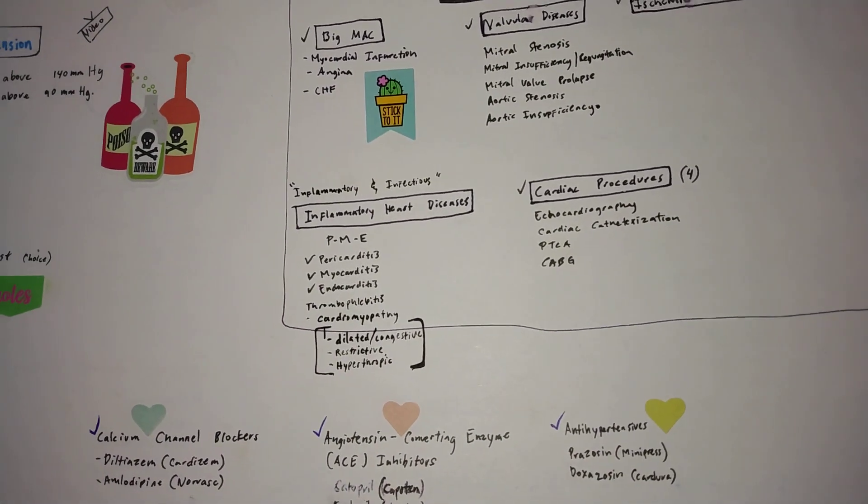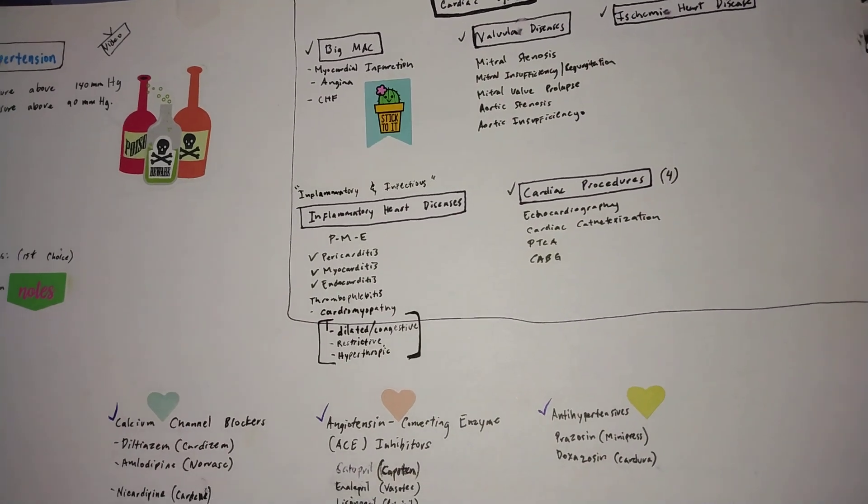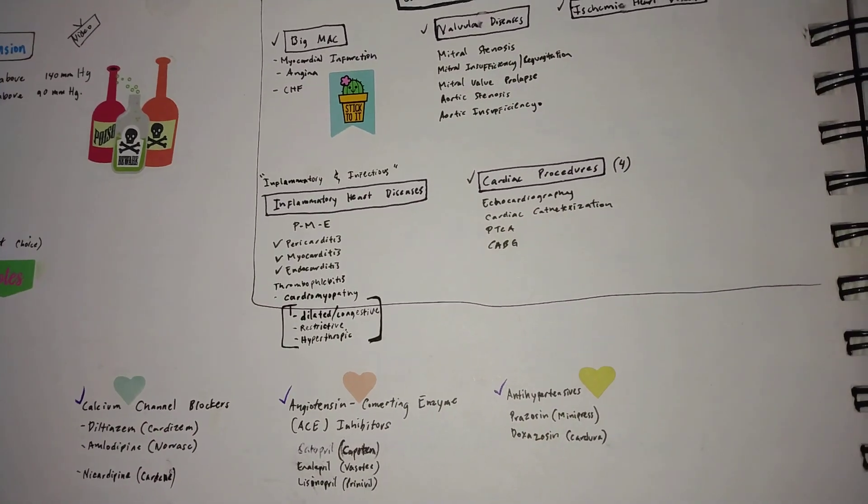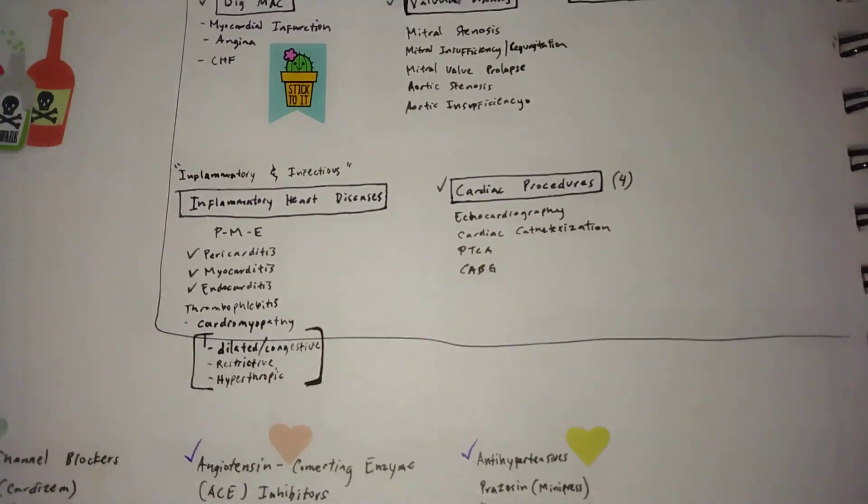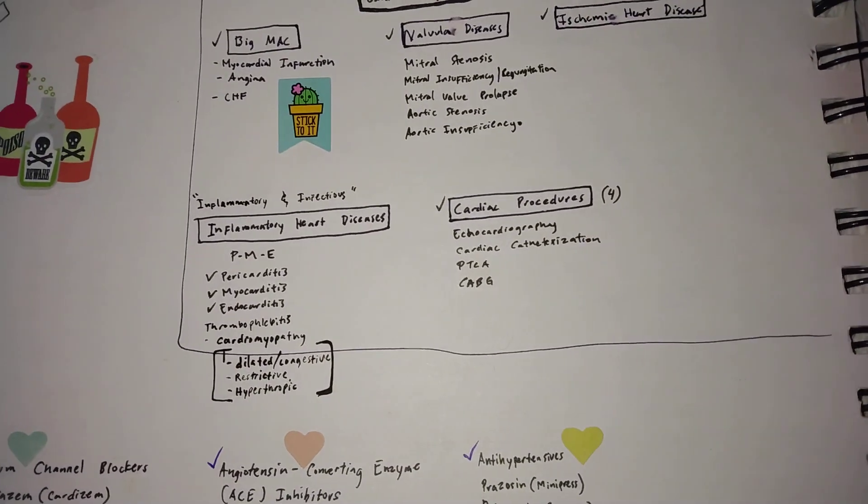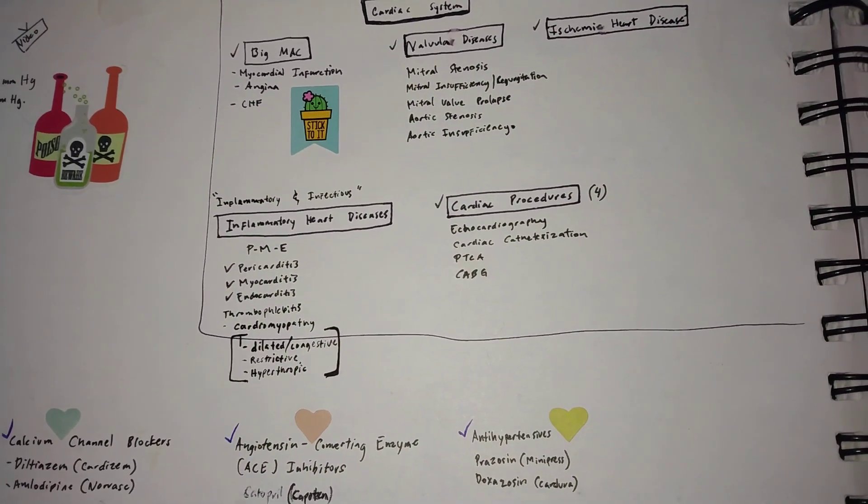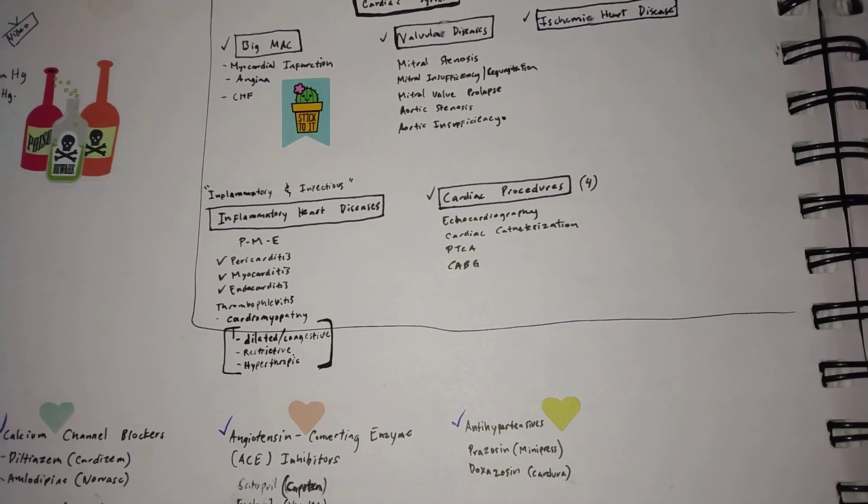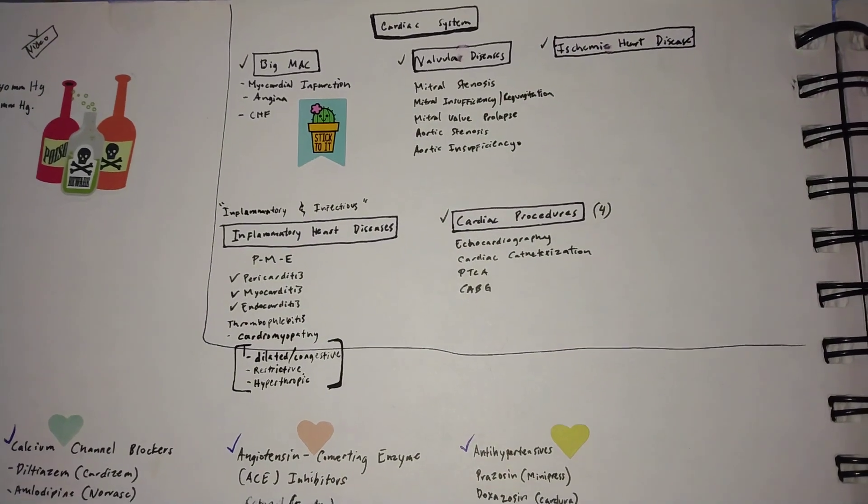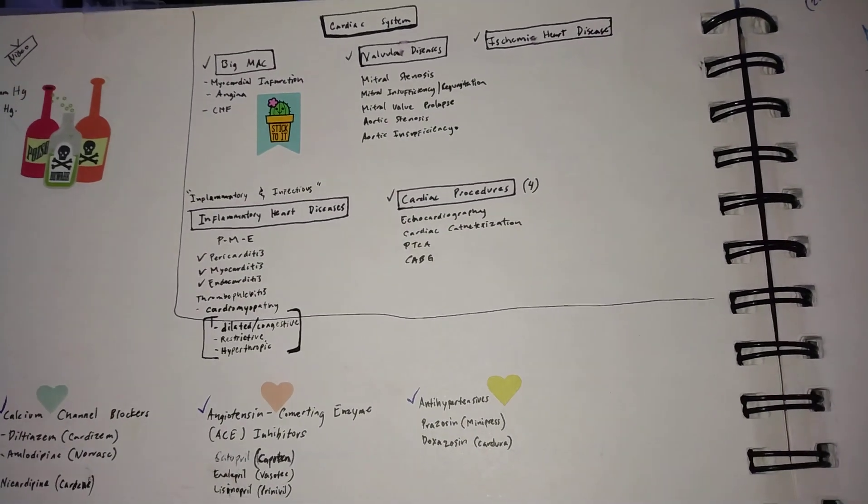What I call the Big Mac, which is basically the big three that you will most likely encounter in the exam: myocardial infarction, angina, and CHF. Obviously, we have our valvular diseases: mitral stenosis, mitral insufficiency or mitral regurgitation, mitral valve prolapse, aortic stenosis, and aortic insufficiency.